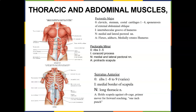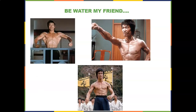The serratus anterior is one of my favorite muscles. It originates on ribs 1 through 8, some sources say 9, and inserts on the medial border of the scapula. The nerve is the long thoracic nerve. Its main purpose — and it's very good in postural control — is that it holds the scapula against the rib cage. It's also a prime mover for forward reaching, and we like this for the one-inch punch. Check out Bruce Lee's lats and serratus — amazing.